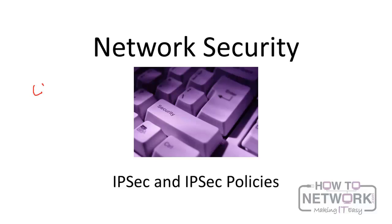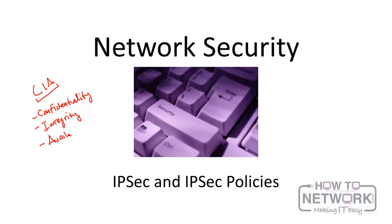Whenever we talk about security, there's something called the CIA triad that we need to keep in mind. C stands for confidentiality, meaning only the people we want to see something actually see it. I stands for integrity, meaning what we send is what the other party receives — it hasn't been tampered with. And finally, we have to balance all of this against availability. It doesn't matter if something is super secure if no one can access it. That's where IPsec comes into play.